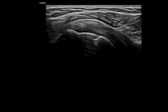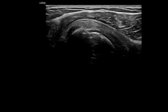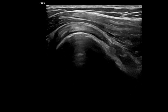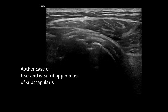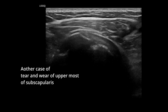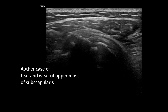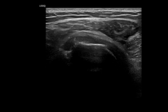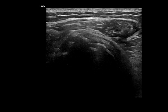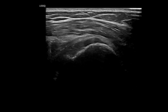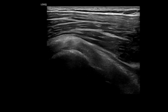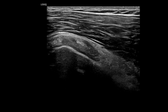Such tears at the uppermost area are prevalent among golfers, arising from backswing motions and impingement between the coracoid process and the lesser tuberosity. During the scan, measure the tendon size, assess the echo texture, and check for any signs of calcification or tears from the uppermost to the lower border, scanning the full length of the subscapularis.